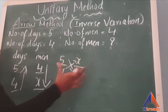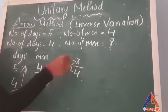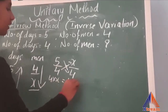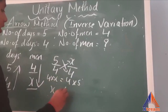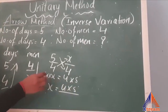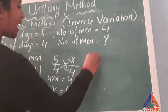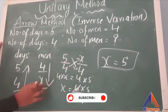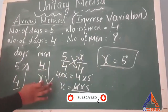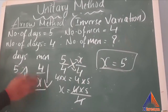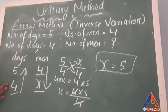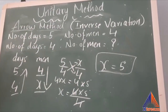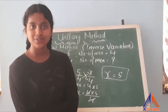Third step: writing in fractional form. The arrow points towards 5, so we write 5 over 4. In the men column, the arrow points towards x, so x is in the numerator and 4 in the denominator. Cross multiplication gives 4x = 4 × 5. Transfer 4 to the right, cancel 4 and 4, and x = 5. So 5 men can complete the work in 4 days.